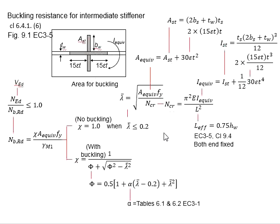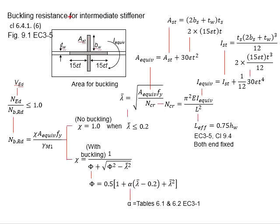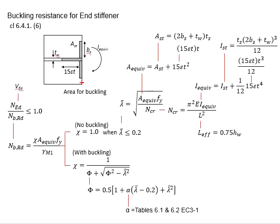Therefore, we are to check the buckling resistance for the intermediate stiffener and also the end stiffener. The difference between the intermediate stiffener and end stiffener are: intermediate stiffener you have the web at both sides of the stiffener while the end stiffener you have only one side with the web.